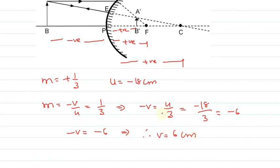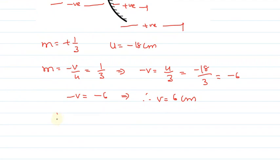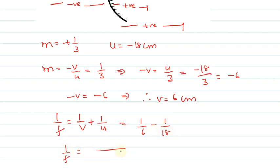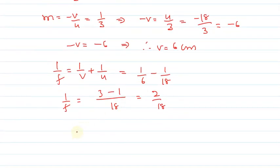Now we will find the focal length using the mirror formula: one by f equals one by v plus one by u. Substituting the values: one by f equals one by six plus one by minus eighteen, which gives one by six minus one by eighteen. Taking LCM as eighteen: numerator is three minus one equals two, so one by f equals two by eighteen, therefore f equals nine centimeters.